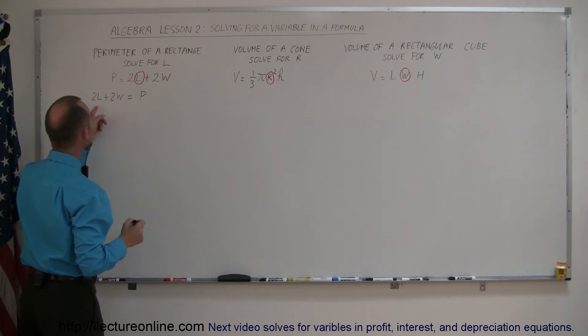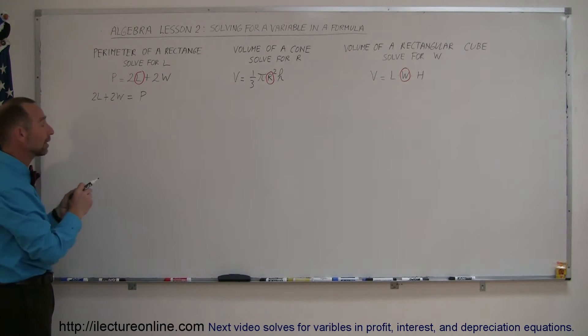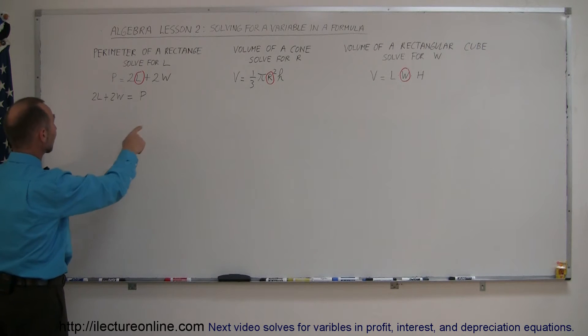Now the next thing we want to do is if there's more than one term on the left side, we want to move all the terms that do not have the variable in it to the right side. So we're looking for L and we're not looking for W, we'll move this term to the right side.